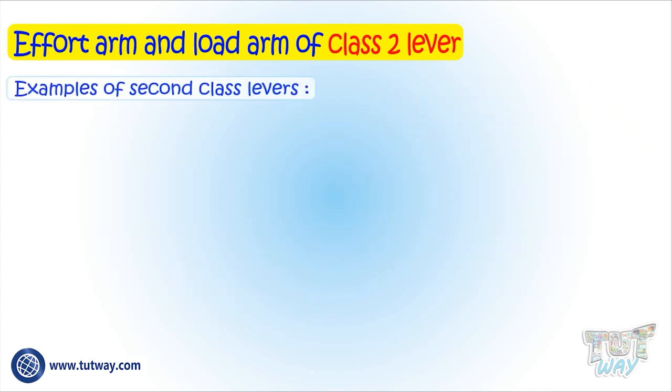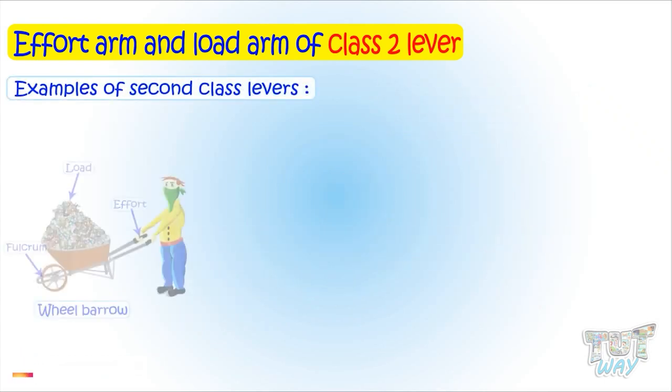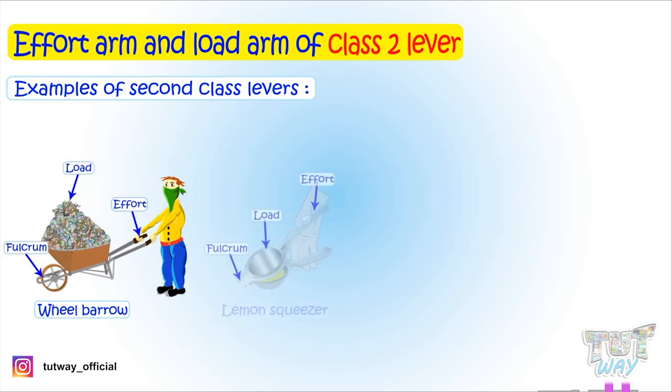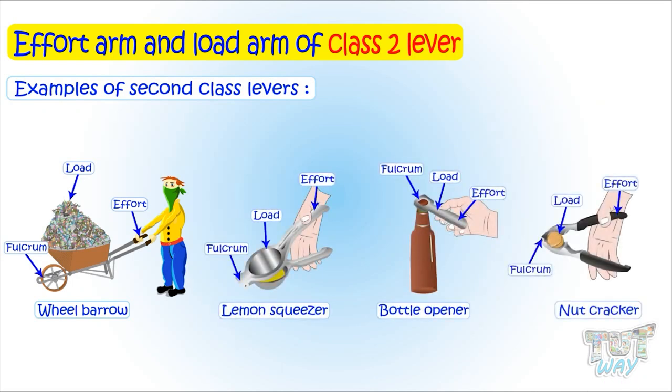Examples of class 2 levers include a wheelbarrow, lemon squeezer, bottle opener, nutcracker. All have load in the center and so all of them have effort arm much bigger than the load arm.